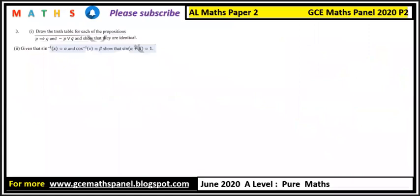Question three: draw the truth table for each of the propositions p implies q and negation of p or q, and show that they are identical.